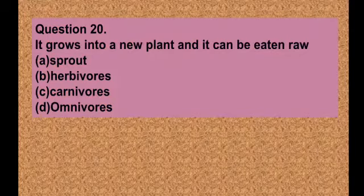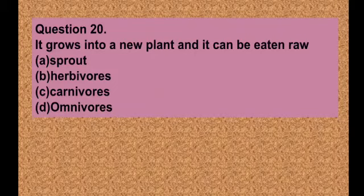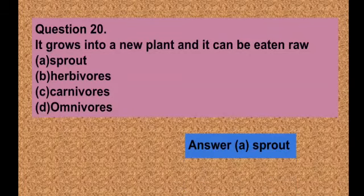Question number twenty: It grows into a new plant and it can be eaten raw — option A sprout, option B herbivores, option C carnivores, option D omnivores. The correct answer is option A — sprouts. Sprouts grow into a new plant and can be eaten raw. The rest of the options are feeding habits.